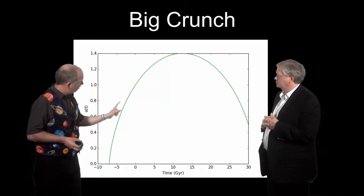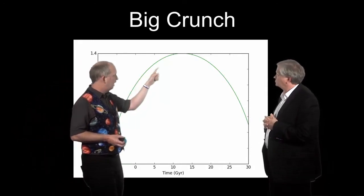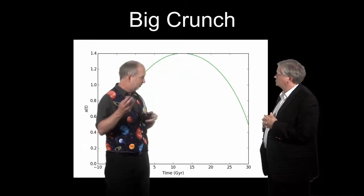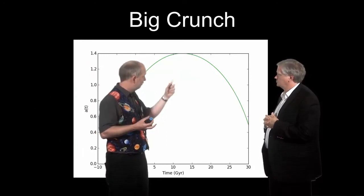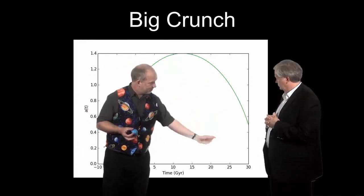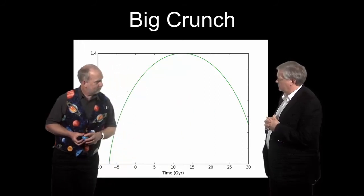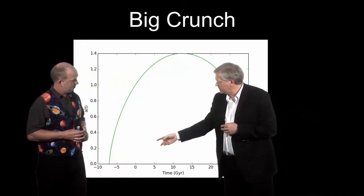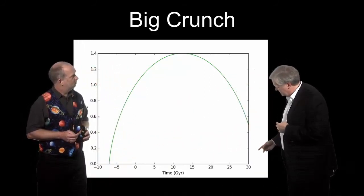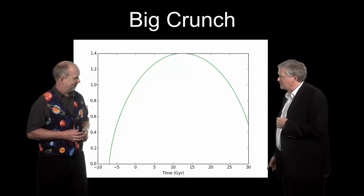So here's what you get if you solve this using the same program. And you see the universe is getting bigger at the present. But it will slow down, slow down, and eventually it will stop, at the point where the second term becomes equal and opposite to the first term. And then it's going to start shrinking.